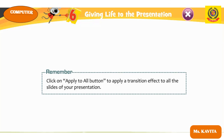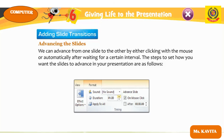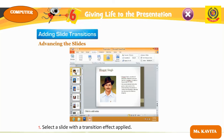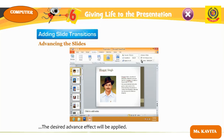Advancing the slide: we can advance from one slide to another by clicking the mouse or automatically after a set interval. To advance manually, enable the On Mouse Click option. To advance automatically, enable the After checkbox and set the desired time. Select Apply to All to apply the same method to all slides in the presentation.